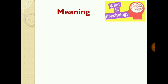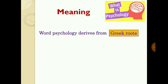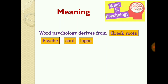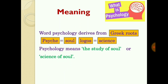What is psychology? The word psychology is derived from Greek roots — it has two Greek words. The first one is 'psyche,' meaning soul, and the next word is 'logos,' which means science. So psychology is the study of the soul, or the science of the soul.